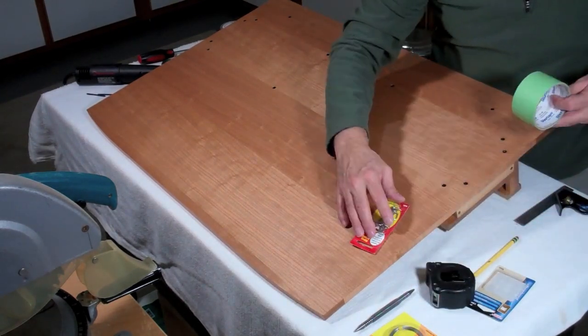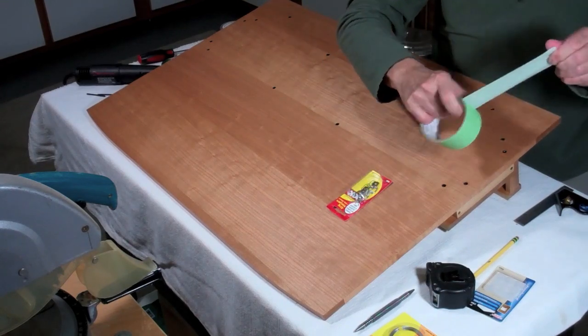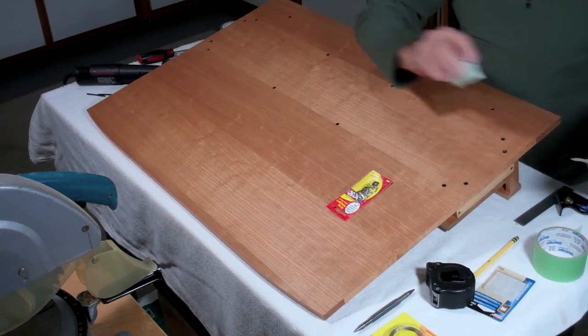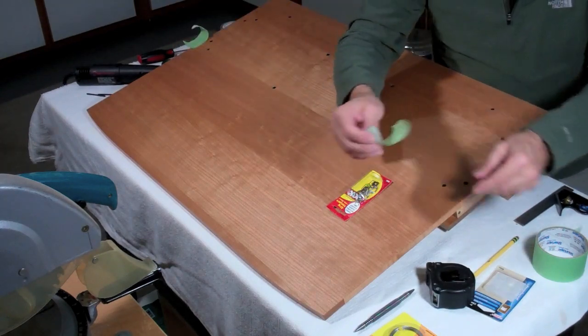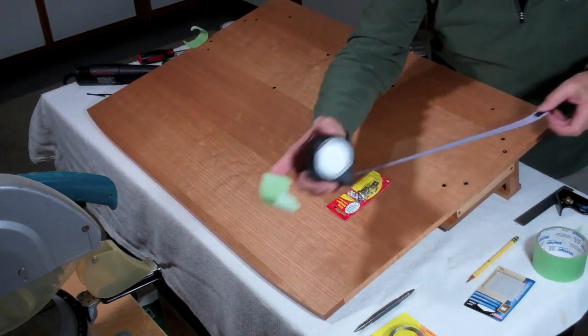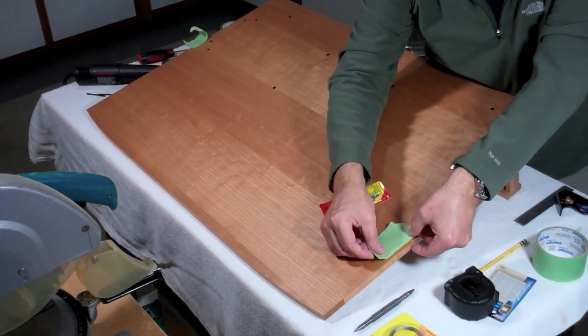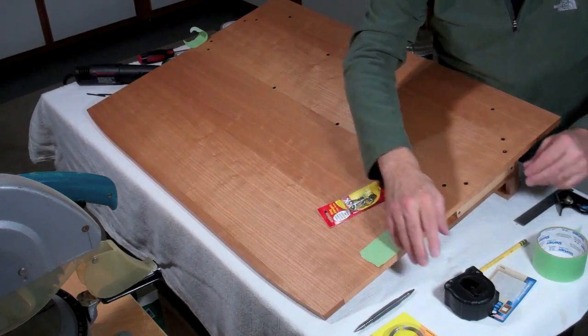And what I like to do in projects like this is use this green painter's tape. I like it because it's light green. It provides a nice contrast for pencil marks. It makes it easy to find the marks. And then you're not marring the surface.